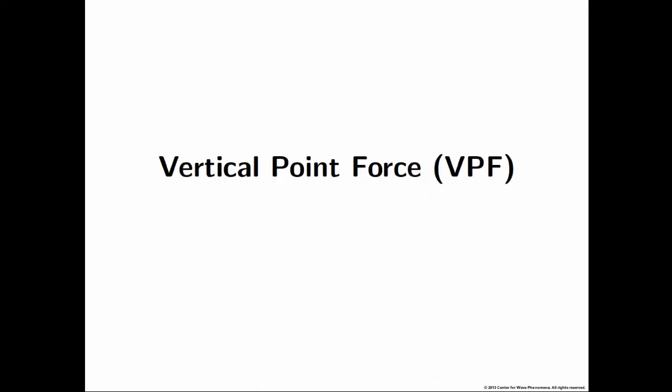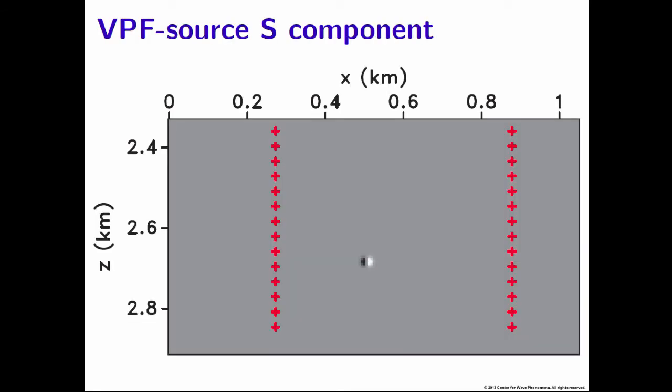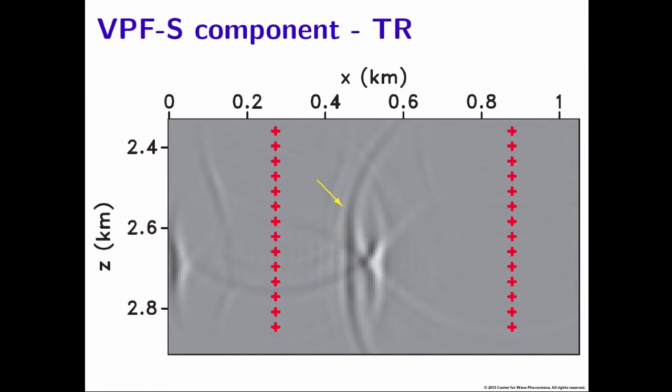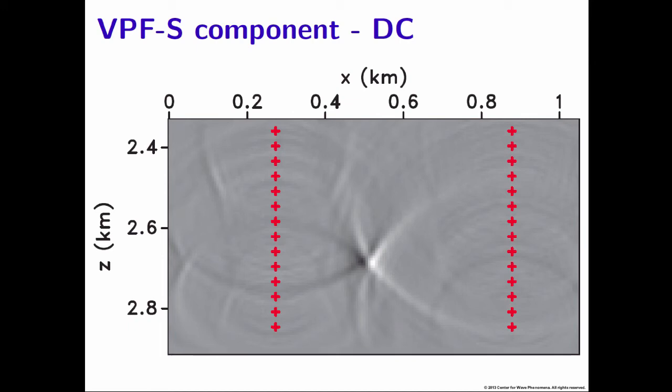We then did the same analysis for the vertical point force — essentially rotating our source 90 degrees, thus rotating our radiation patterns as well. We'd expect everything to switch, since the radiation patterns switch orientation. For the vertical point force, the S component will not have a nodal line intersecting our receivers but rather running parallel, so we'd expect to see improvement for the S component using deconvolution. Using time reversal, the yellow arrow indicates the wavefront that isn't compressing at the time of focus, making it very hard to see the radiation pattern. Using deconvolution, we get a much cleaner result by removing that wavefront.